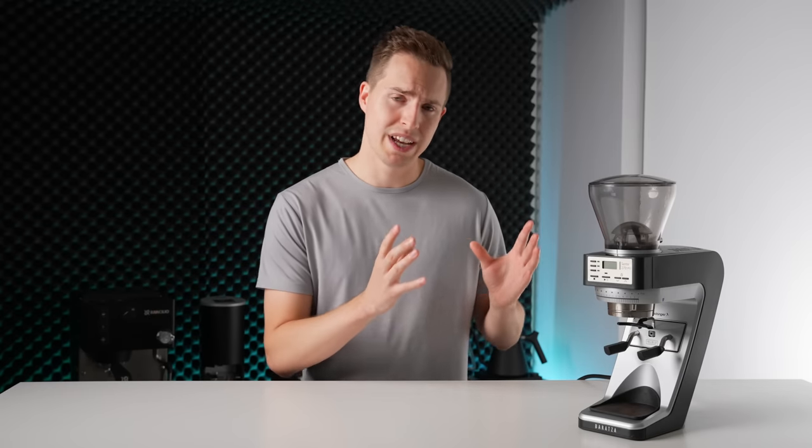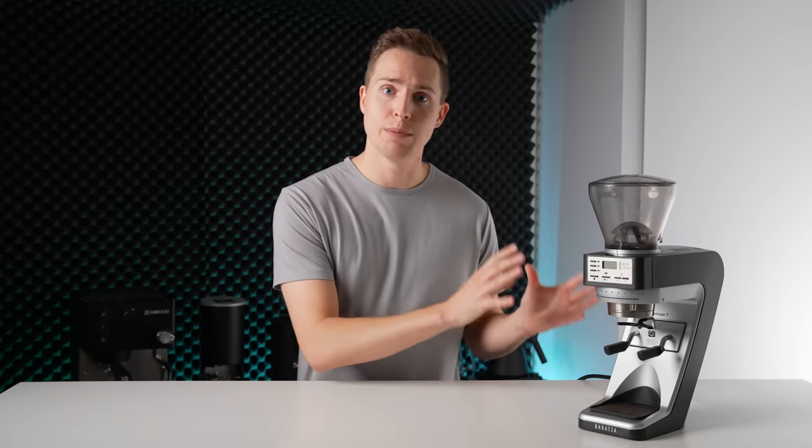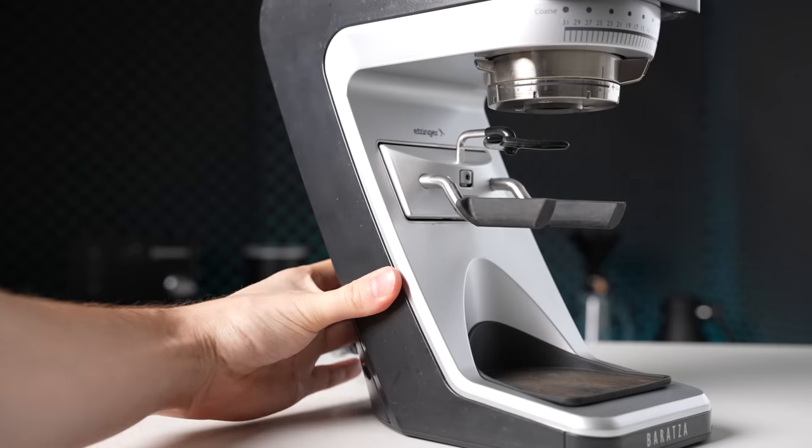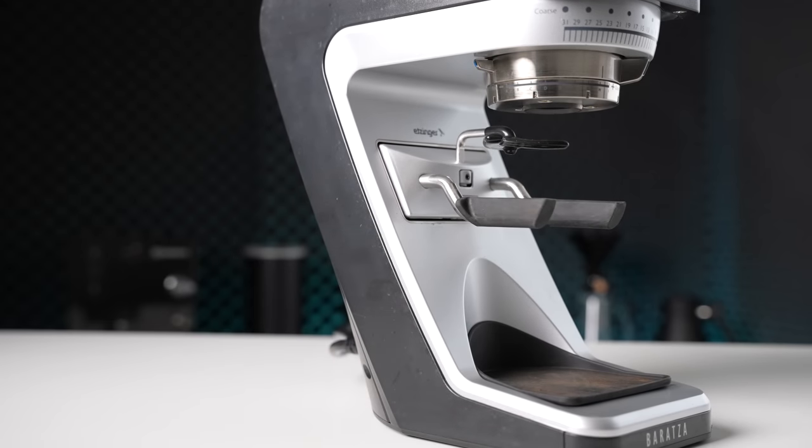On the base model Sette 30, I don't see this as being too much of an issue, but as you start to step up to the 270 and especially the 270Wi models, I just don't think that this level of finishing is quite appropriate for the asking price. This is definitely one disadvantage of using the same chassis for the whole product lineup, but I think it's important to note that it doesn't feel concerningly cheap. There's no bend or flex to the shell because of the thick plastic used, and it does feel like it would hold up relatively well over time.